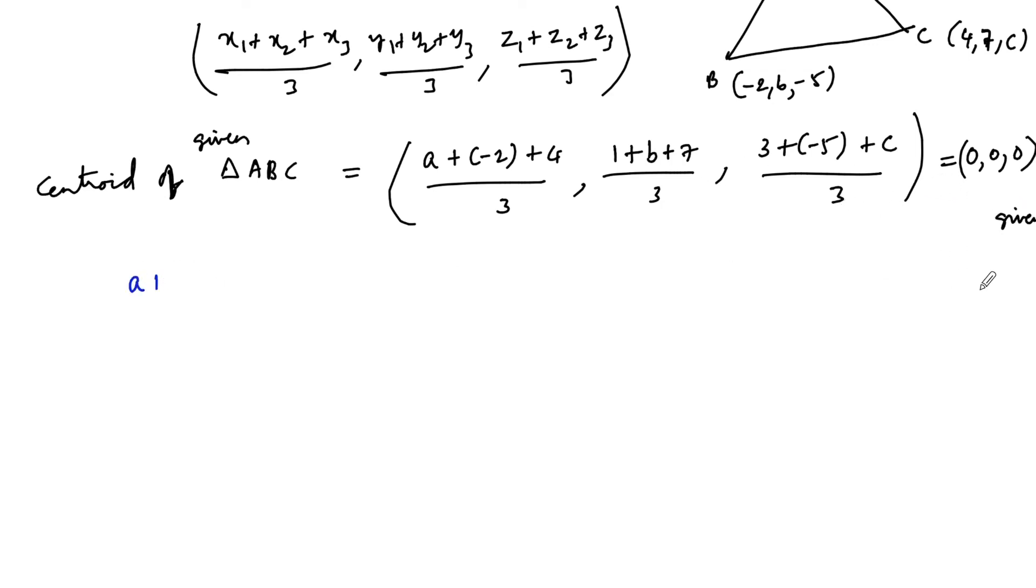So we can write (a - 2 + 4)/3 = 0, (1 + b + 7)/3 = 0, (3 - 5 + c)/3 = 0.